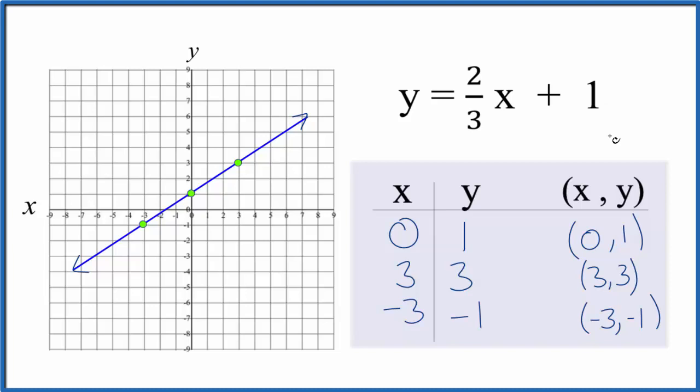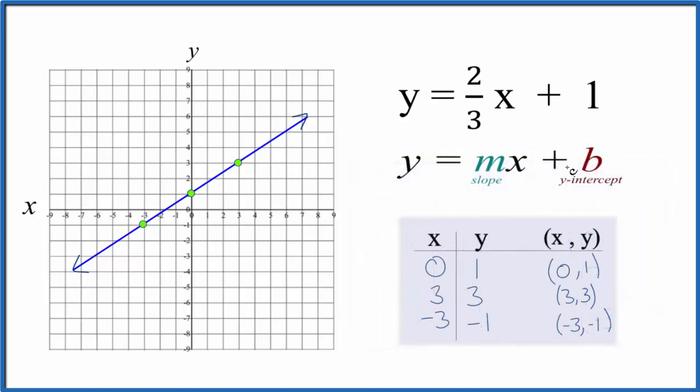Let's check our work with slope-intercept formula. So we have y equals mx plus b. b, that's the y-intercept, that's one. So our line should cross the y-intercept at one right there. So that makes sense.